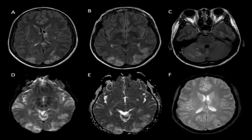This is a classical MRI of PRES. From panels A to C, which show T2 FLAIR imaging: in A, there is prominent cortical and subcortical white matter signal hyperintensity involving both occipital lobes. In B, similar hyperintensity is seen in the left anterior parietal lobe, left frontal lobe, and the splenium of the corpus callosum. In C, there is patchy T2 FLAIR hyperintensity within the right cerebellar hemisphere.